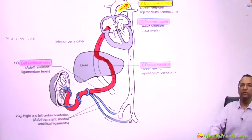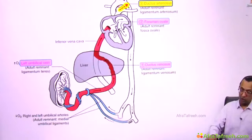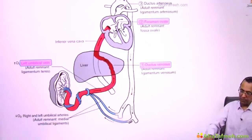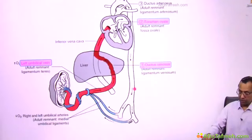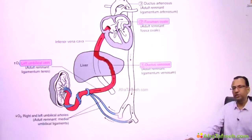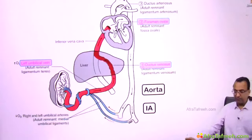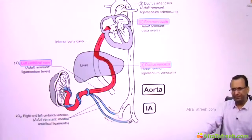Most of this oxygenated blood should enter the carotid artery and brain, since the mother was sending oxygen towards the developing brain. Deoxygenated blood in the fetus is then collected by the aorta into the iliac artery, which pushes this blood into the right and left umbilical arteries.